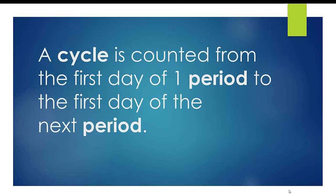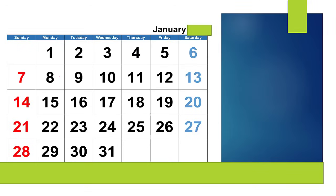A cycle is counted from the first day of first period to the first day of the next period. In order to calculate the ovulation days, first of all, calculate the length of your cycle. How will you calculate the length of your cycle?